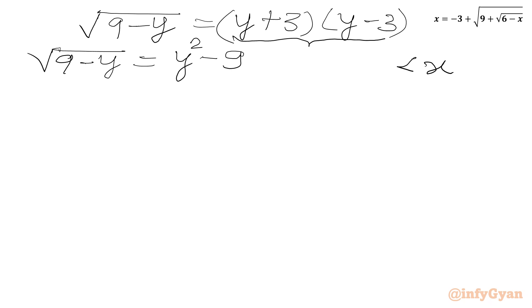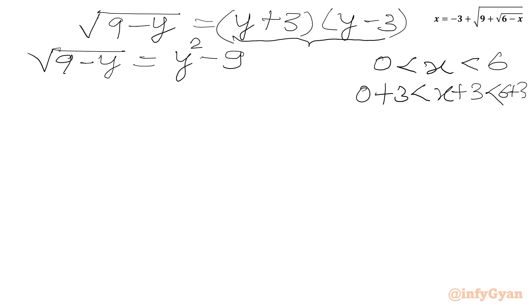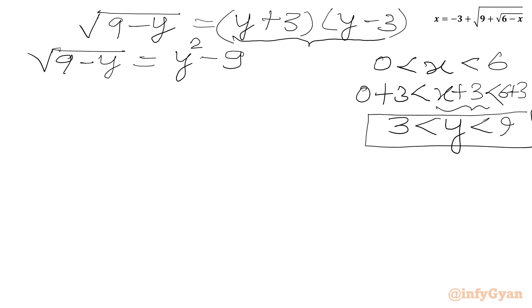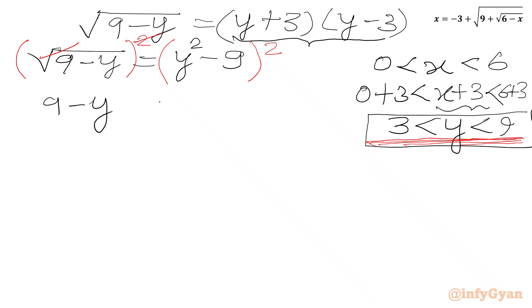Our condition on x was x in the interval (0, 6). Adding 3 to this inequality: 0 plus 3 less than x plus 3 less than 6 plus 3, so y should lie in the interval (3, 9). Now we square both sides to remove the square root: (9 minus y) equals (y squared minus 9) squared.